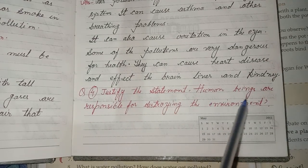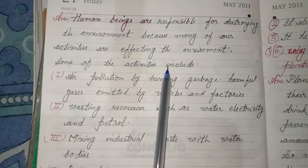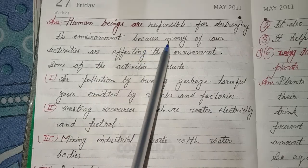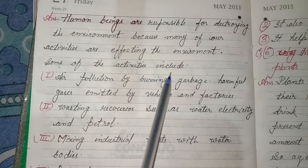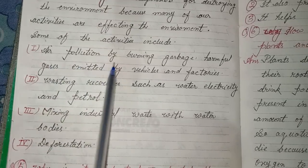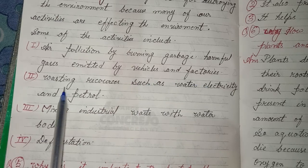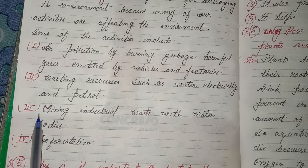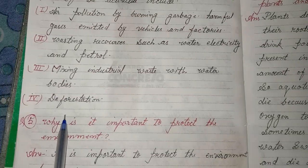Fourth, justify the statement: human beings are responsible for destroying the environment. Answer: Human beings are responsible for destroying the environment because many of our activities are affecting it. These include: air pollution by burning garbage, harmful gases emitted by vehicles and factories; wasting resources such as water, electricity and petrol; mixing industrial waste with water bodies; and deforestation.